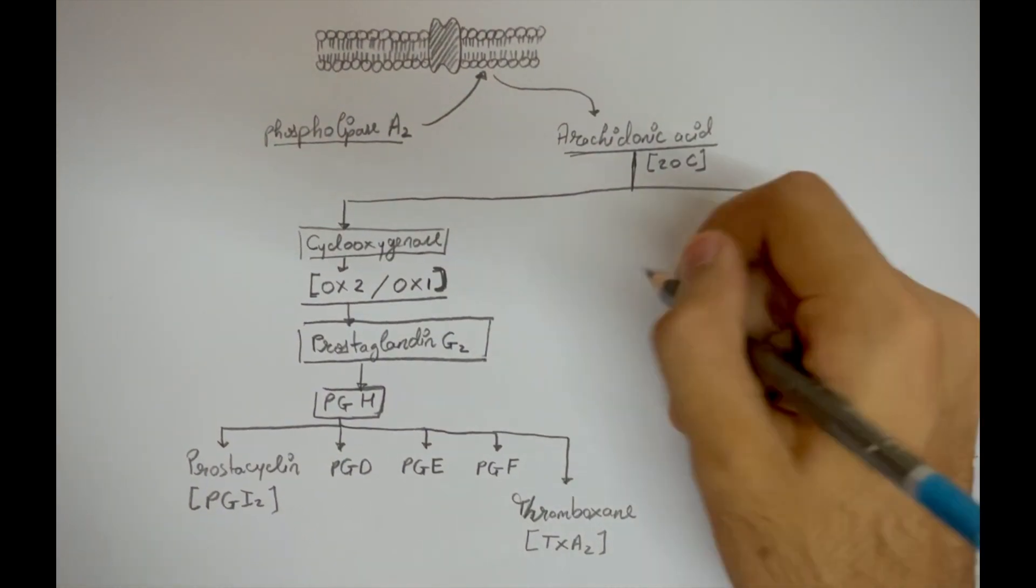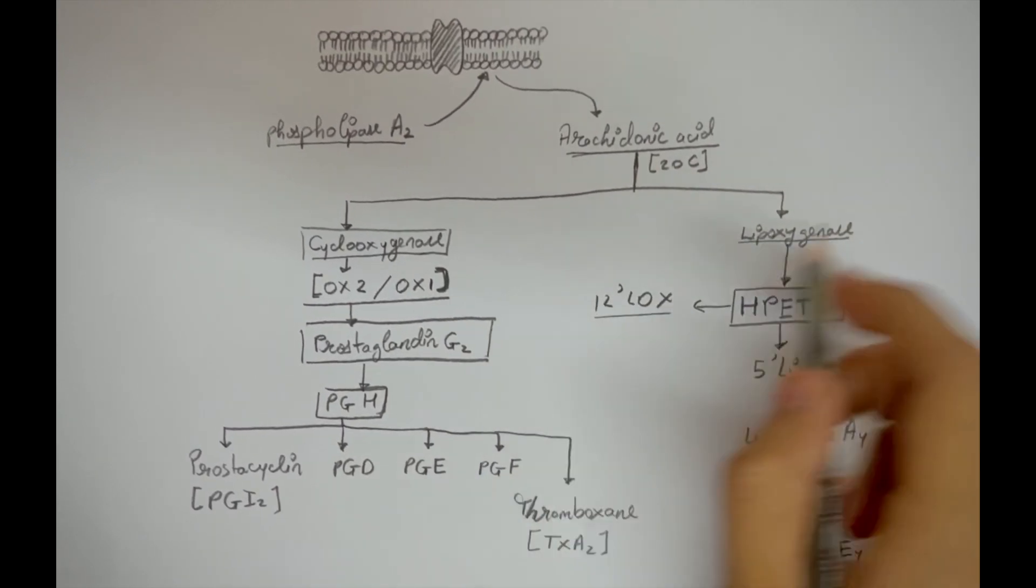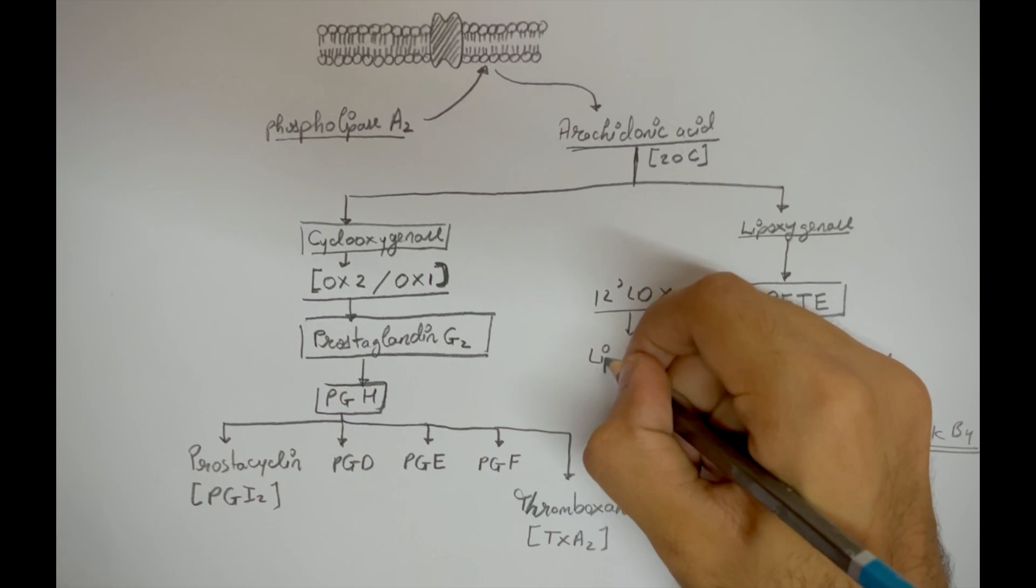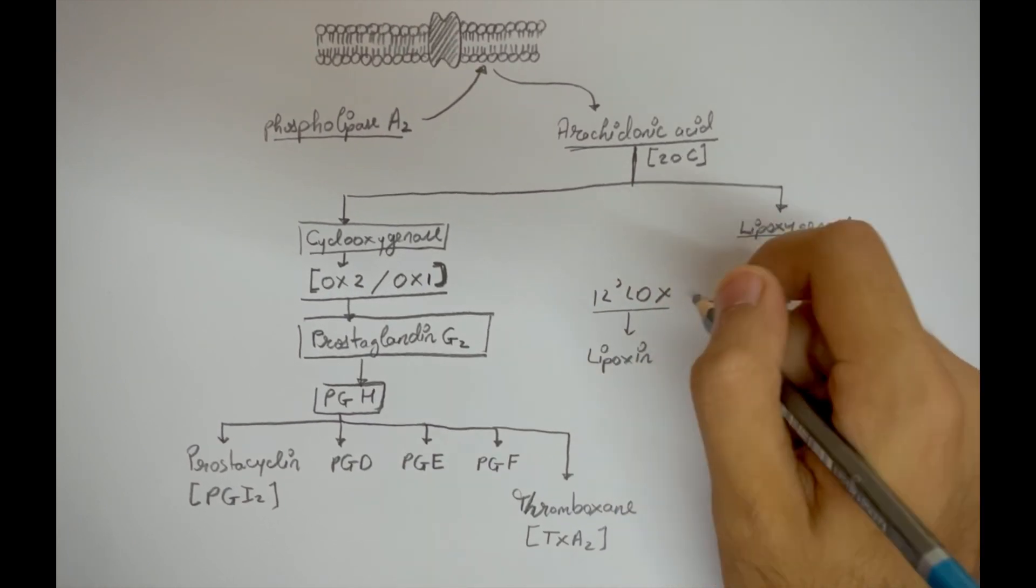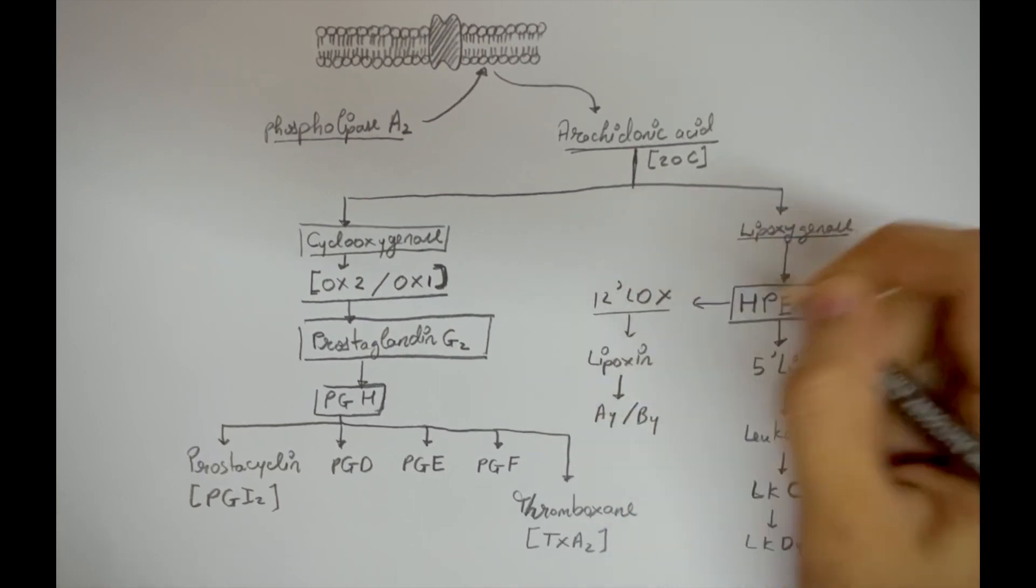The second pathway occurs when HPETE is acted upon by 12-lipooxygenase, which converts it into lipoxins, specifically lipoxins A4 and B4.